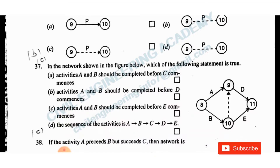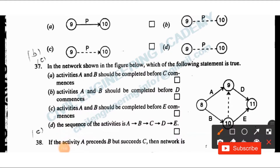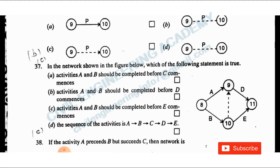Question 37: In the network shown, which statement is true? Option A: activity A and B should be completed before C commences — C is not present, so this is not the answer. Option B: activity A and B should be completed before D commences — using a dummy activity to link them. Option B should be the answer.